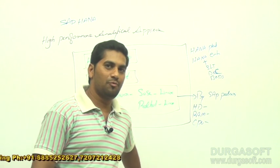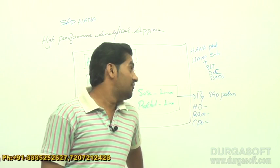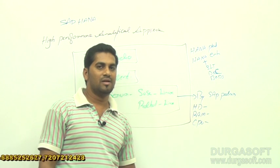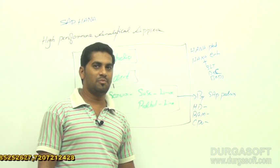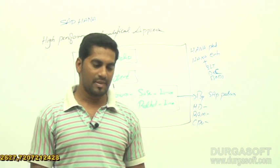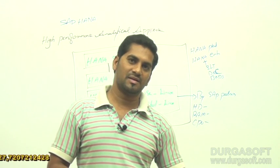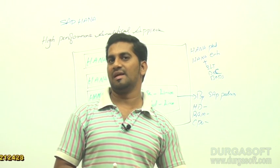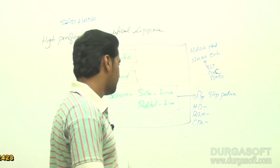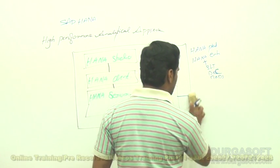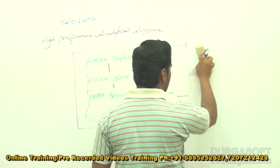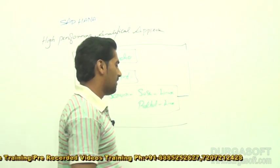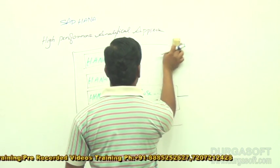If you purchase the HANA enterprise edition, you will get SLT, DXC, BODS, and additional software automatically. It will be installed by SAP partners on the client premises. Once the installation by SAP partners is done, we get a single appliance with multiple nodes.